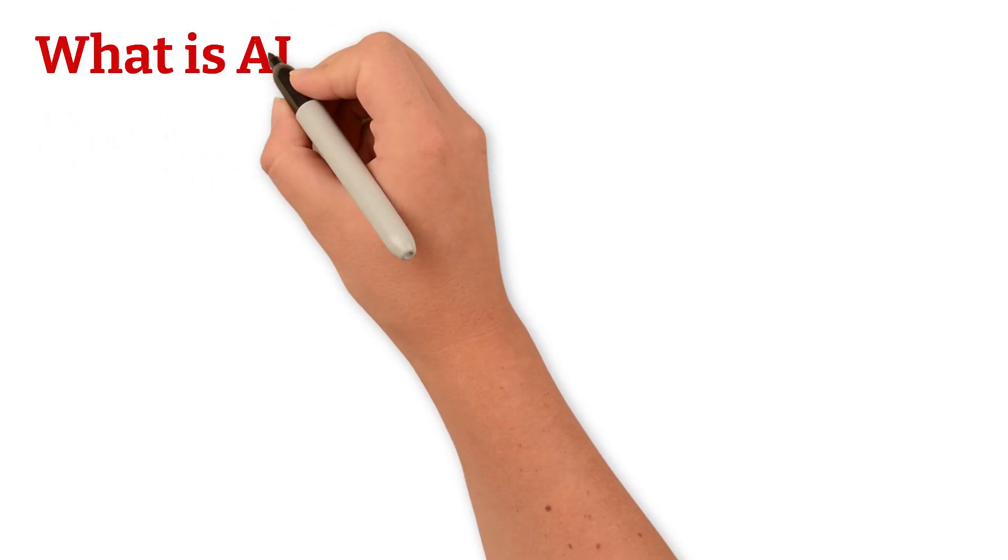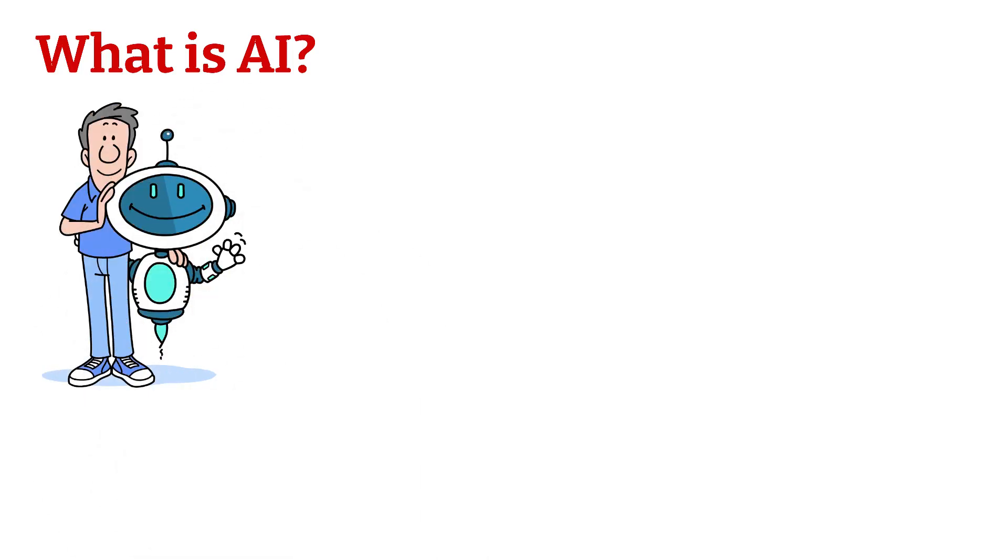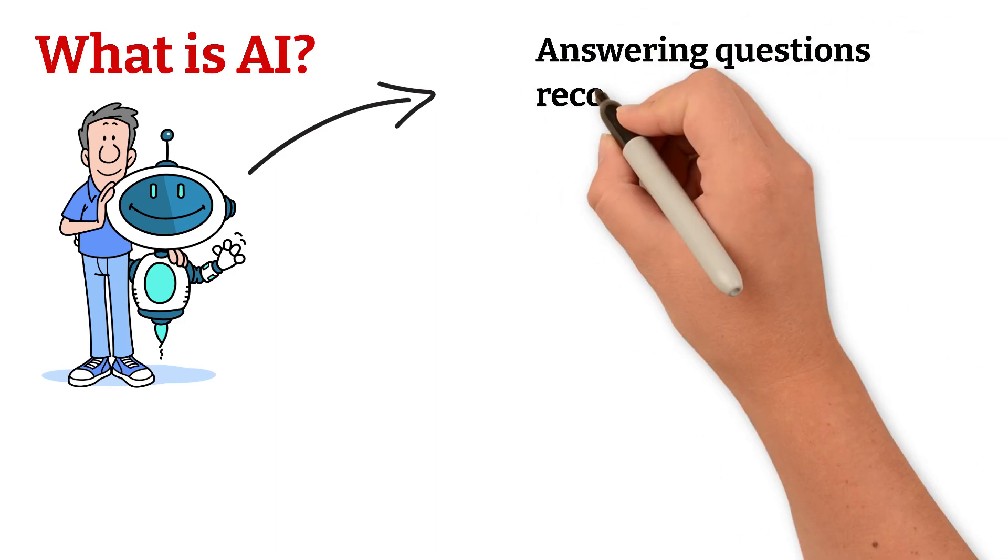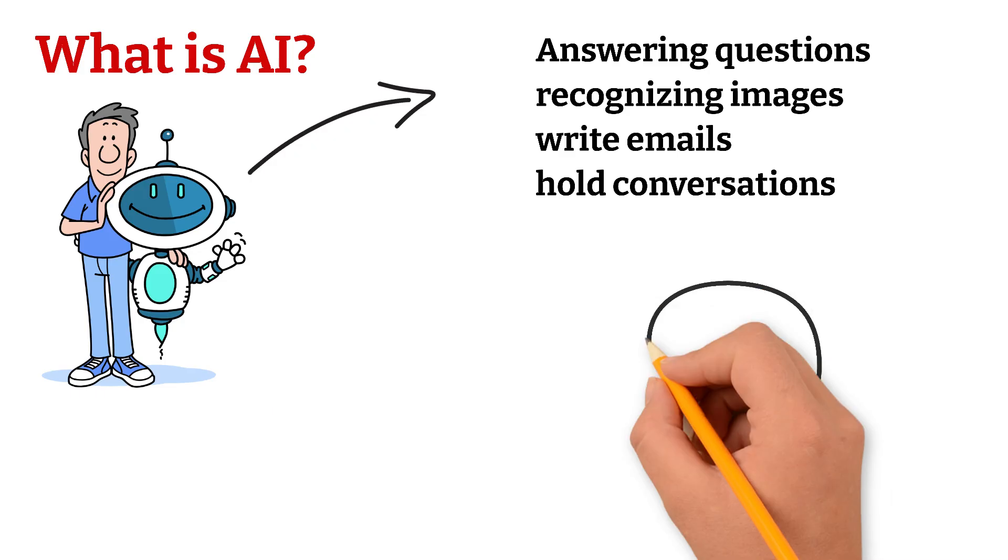What is AI? Artificial intelligence is when machines are trained to think and make decisions like humans, like answering questions, recognizing images, writing emails, and even holding conversations. But how does it get smart?